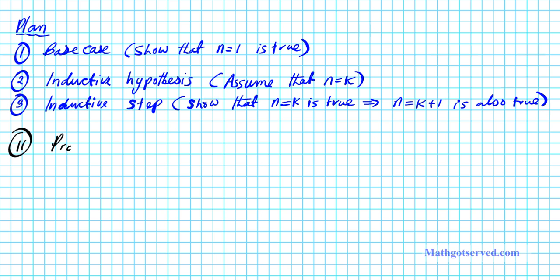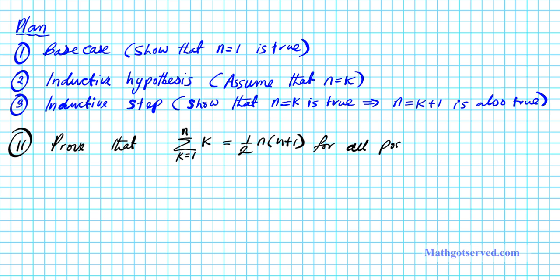Prove that the discrete sum from k equals 1 to n of k is equal to one half of n times n plus 1, for all positive integers n. Let's go ahead and start with the proof.